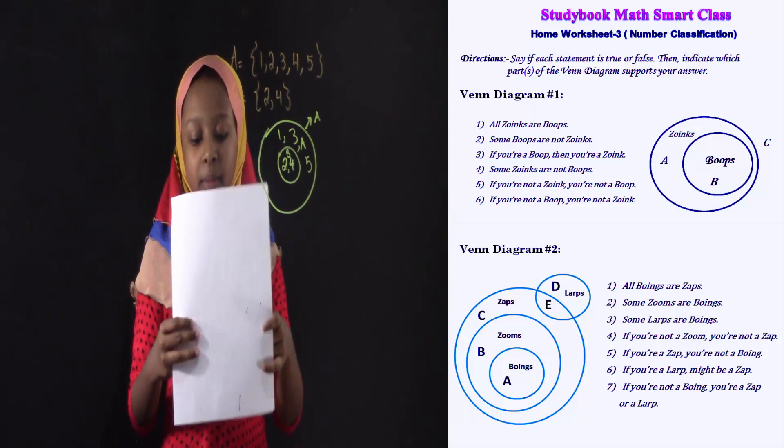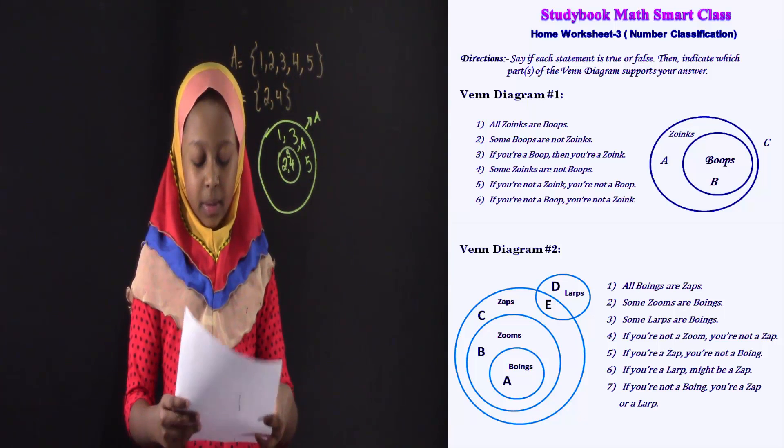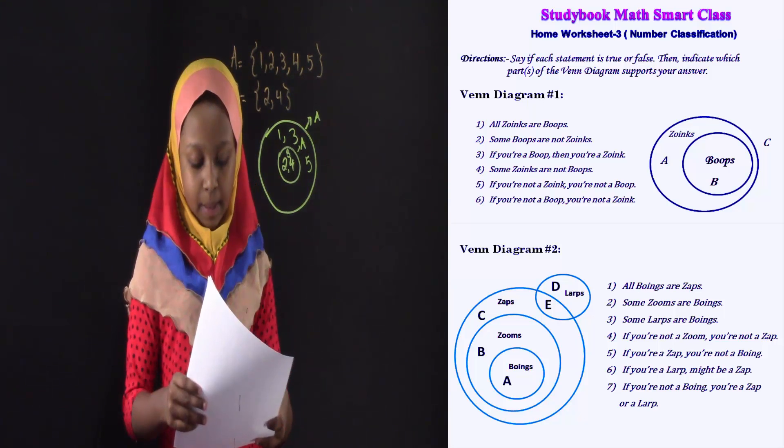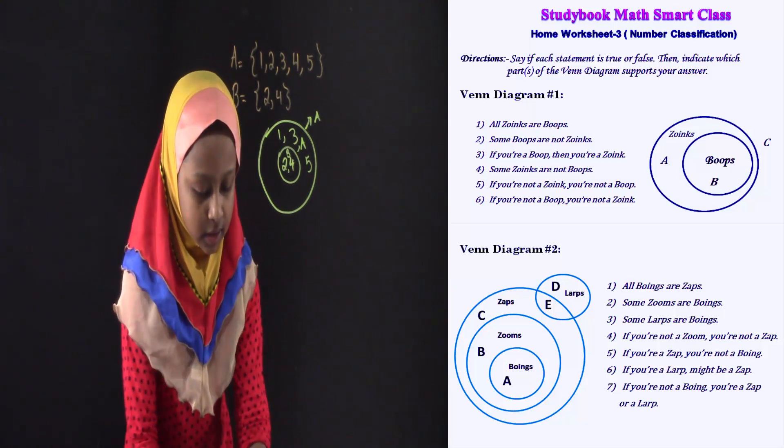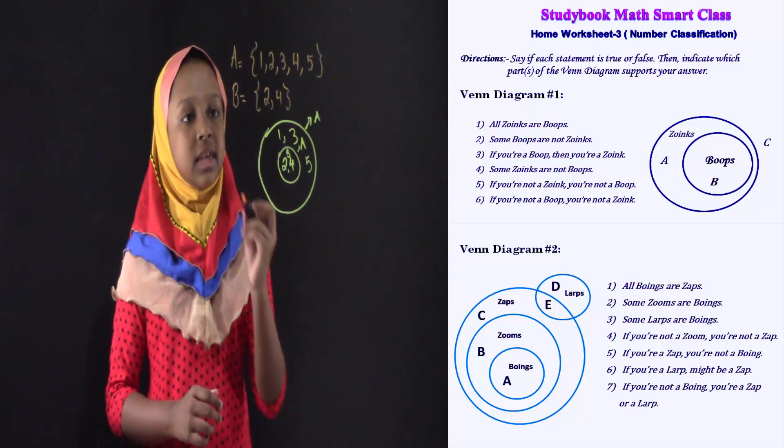Let's move on to Venn diagram number two. For Venn diagram number two, number one is all boinds are zaps. So, now I'm going to write letters C, set C.